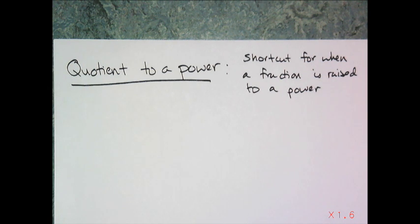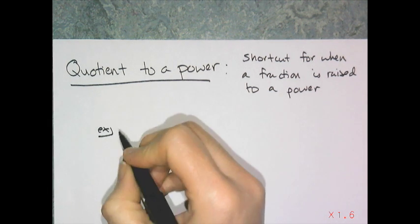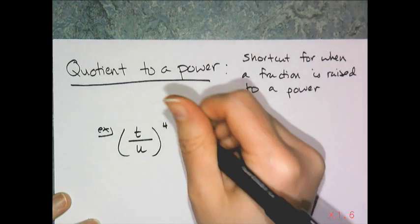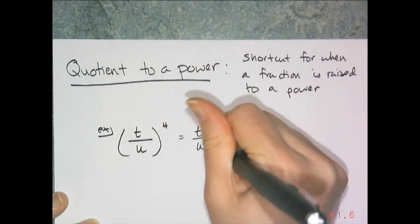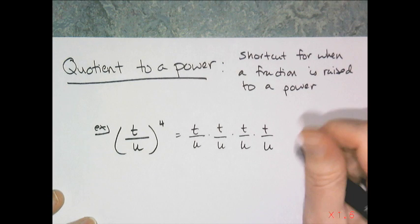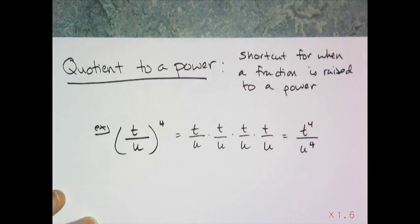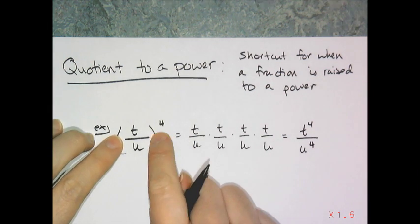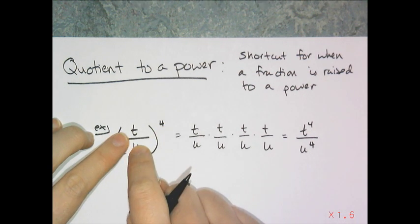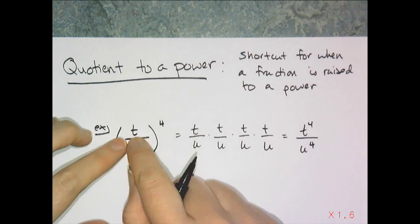The final exponent rule is quotient to a power — a shortcut for when a fraction is raised to a power. By definition, t over u to the 4th power equals t over u times t over u times t over u times t over u, which gives t to the 4th over u to the 4th. The shortcut: apply the outer exponent to each base inside the parentheses.